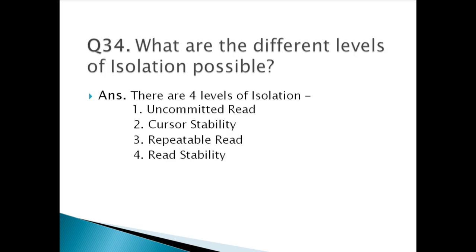Question thirty-four: What are the different levels of isolation? There are four levels. Number one: Uncommitted Read — transactions can see data that are not yet committed. This is the least restrictive level of isolation; it does not protect against any of the phenomena we discussed.